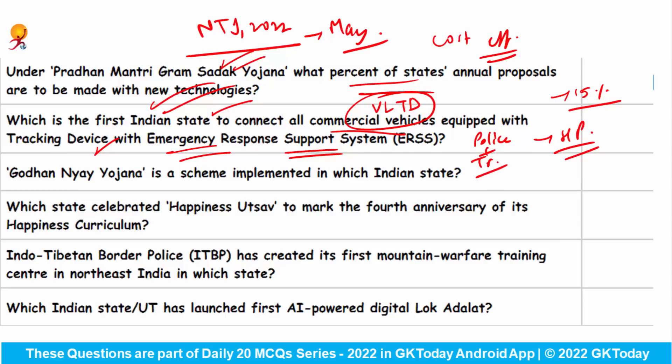Whenever the panic button is pressed, a signal is received on the 112 number through satellite, and the person in distress is connected with the police.